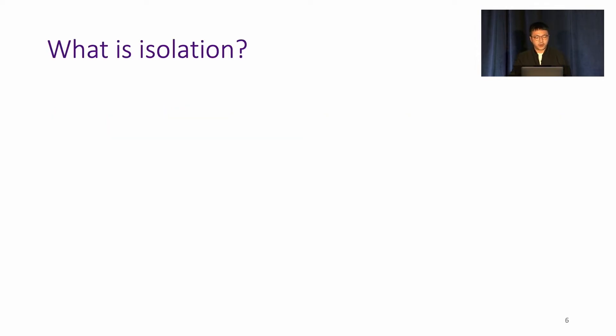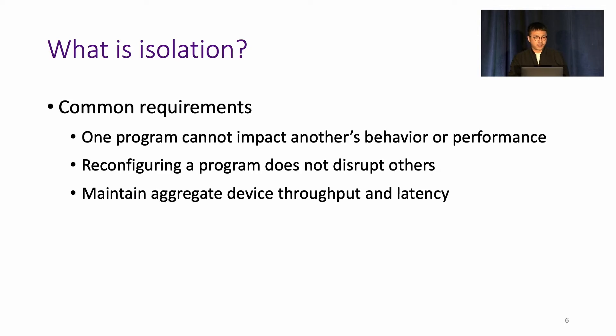So what are the isolation requirements for programs in the context of RMT? Some of them are common and apply to all kinds of devices. For instance, one program cannot impact another's behavior or performance. When one's going to reconfigure its own part, it shouldn't disrupt others. And the isolation mechanism itself shouldn't degrade aggregate device throughput and latency.